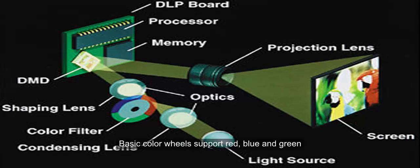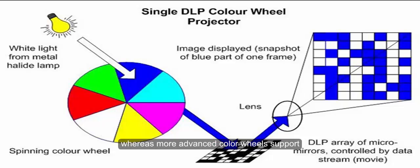Basic color wheels support red, blue, and green, whereas more advanced color wheels support cyan, magenta, and yellow.